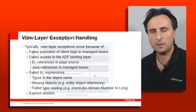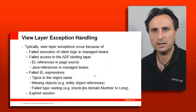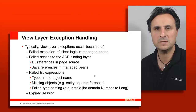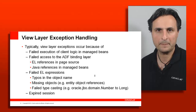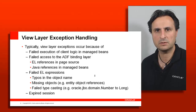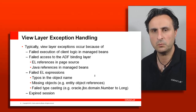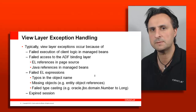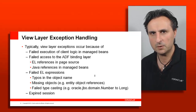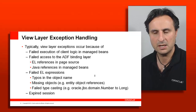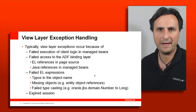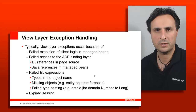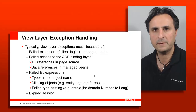What are typical problems that occur on the view layer? First of all, you could have a null pointer exception in a managed bean — in the response where you work with a specific object, you make the assumption that an object is not null where in fact it is. That is definitely something you can avoid by having a try-catch block surrounding the code in the managed bean.